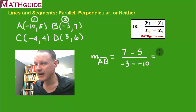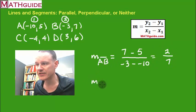So 7 minus 5 is, of course, 2. The double negative becomes plus. Negative 3 plus 10 is 7. So there you go. The slope of AB is 2/7. So let's find the slope of CD.